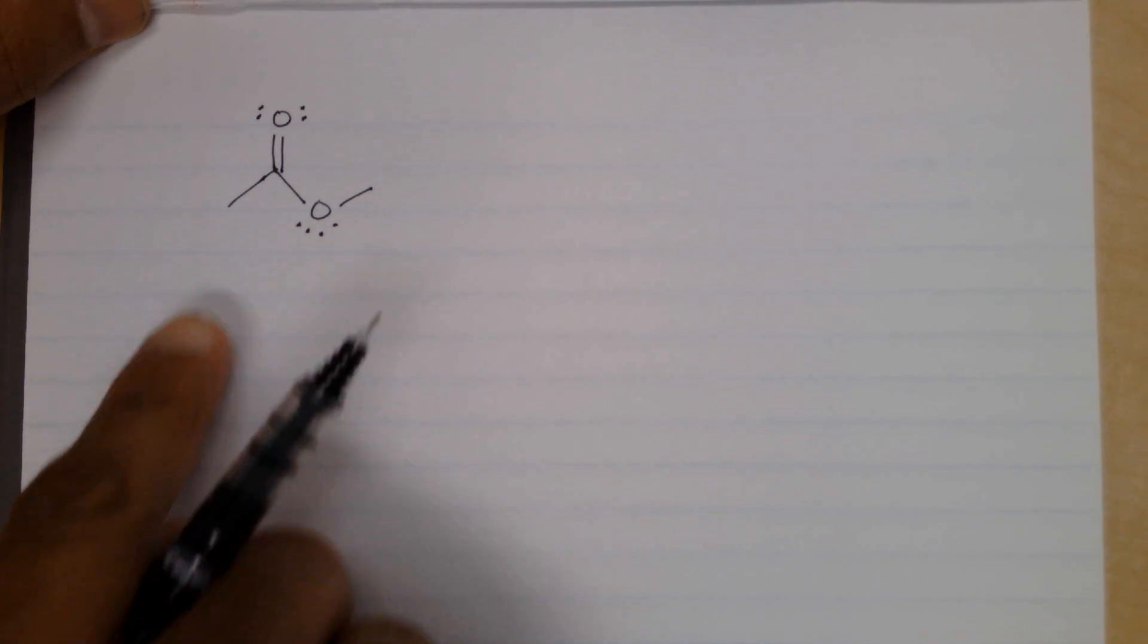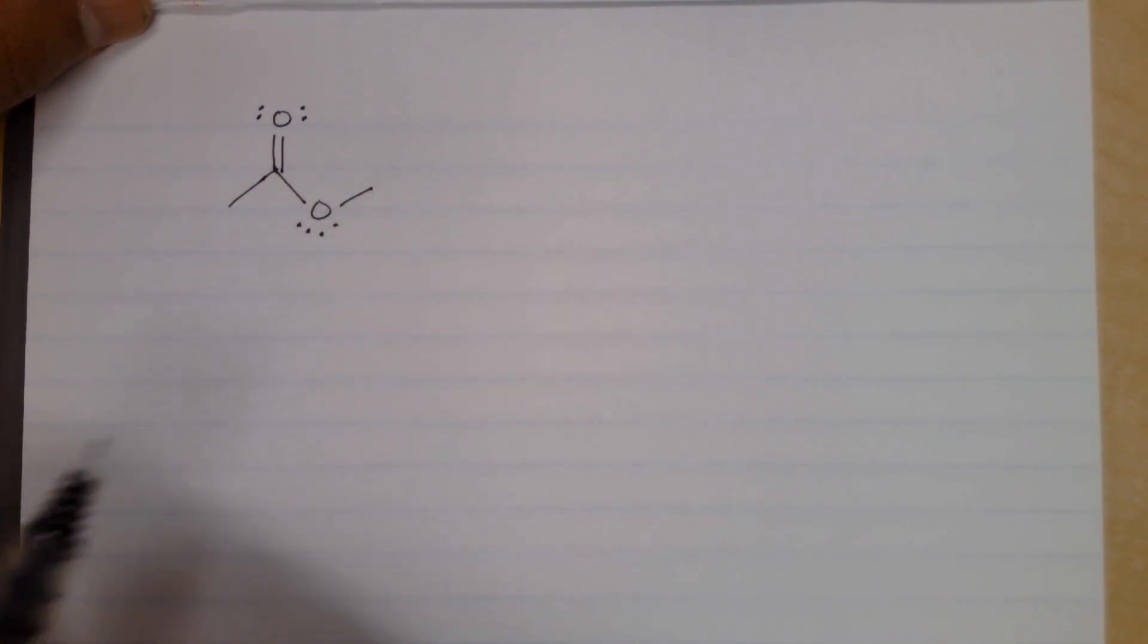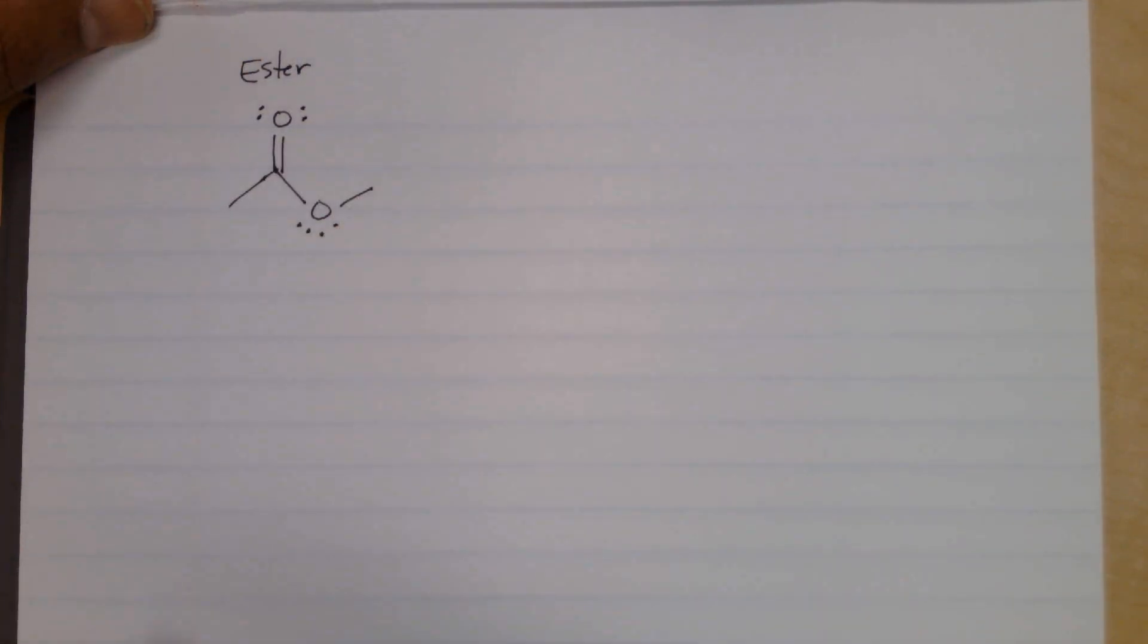In this example, we have a functional group here. This is one of the ones we've discussed already, this is called an ester functional group, and here we can draw a resonance structure.